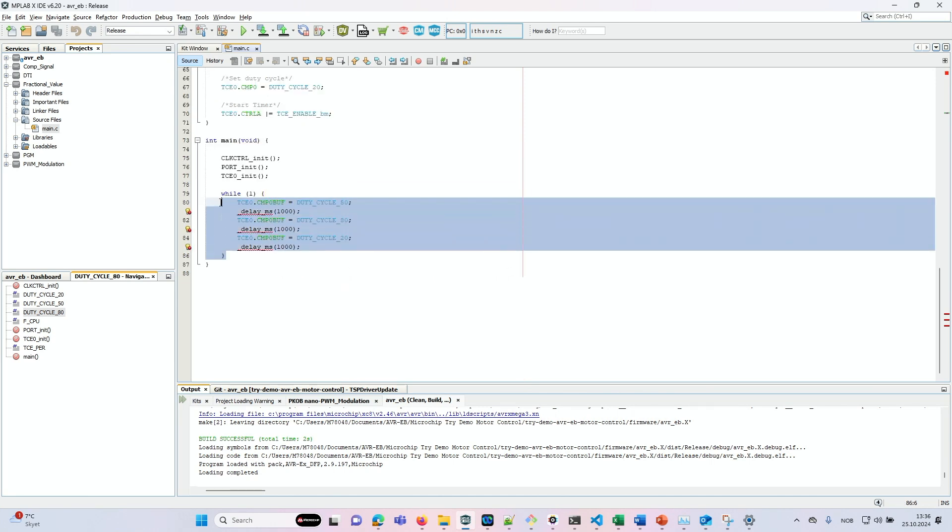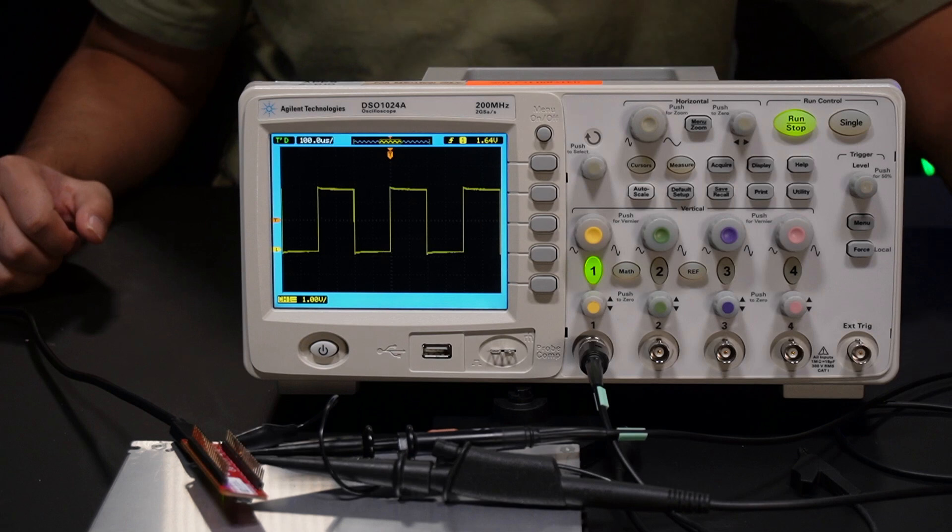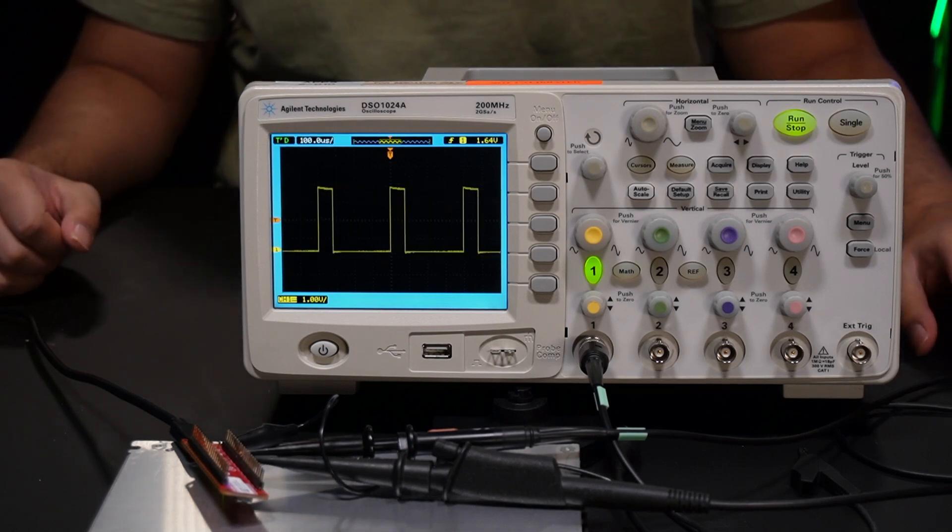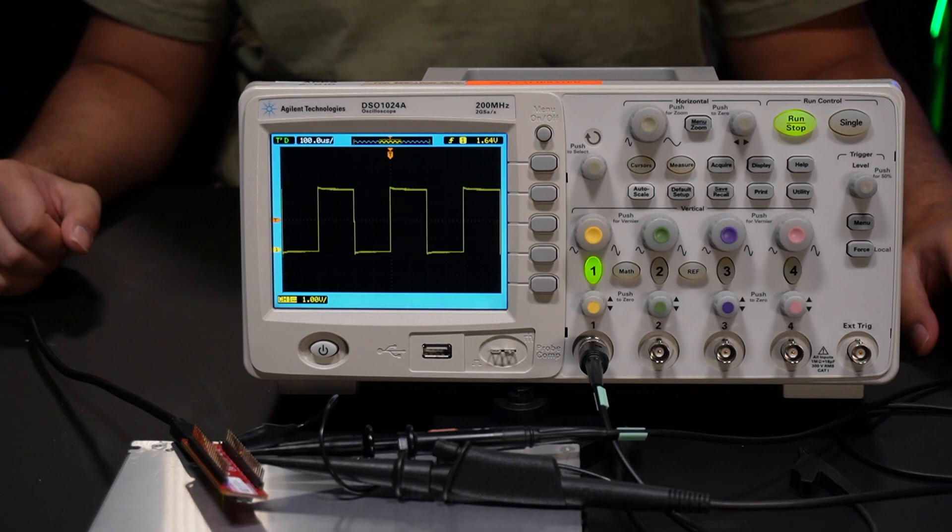So let's say we want to produce a 70% duty cycle. We can just write 0.7 into the register and the TCE will produce a 70% duty cycle.